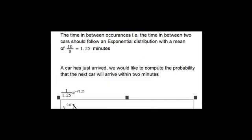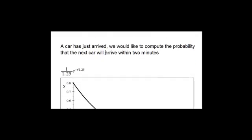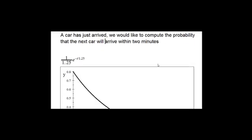Now, the time in between occurrences, that is, the time between two cars should follow an exponential distribution with a mean of 10 over 8, that is 1.25 minutes between any two cars. So say, a car has just arrived and we would like to compute the probability that the next car will arrive within two minutes.